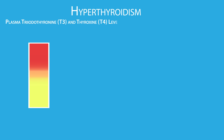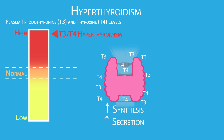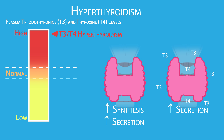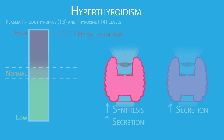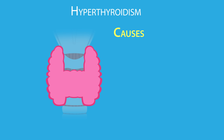Hyperthyroidism is a condition where the thyroid gland produces too much thyroid hormone, either because of increased synthesis and secretion, or just increased secretion. This lesson will focus on the basic mechanisms that lead to hyperthyroidism. Symptoms and basic treatment options will be covered in another lesson.